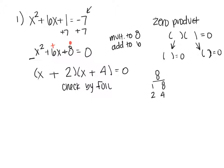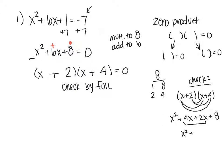x plus 2 times x plus 4. FOIL says first x times x gives me x squared. Outer 4 times x is 4x. Inner 2 times x, and last 2 times 4 gives me 8. Combine my like terms to get x squared plus 6x plus 8, which is the same as my question. So I know my factors are correct.